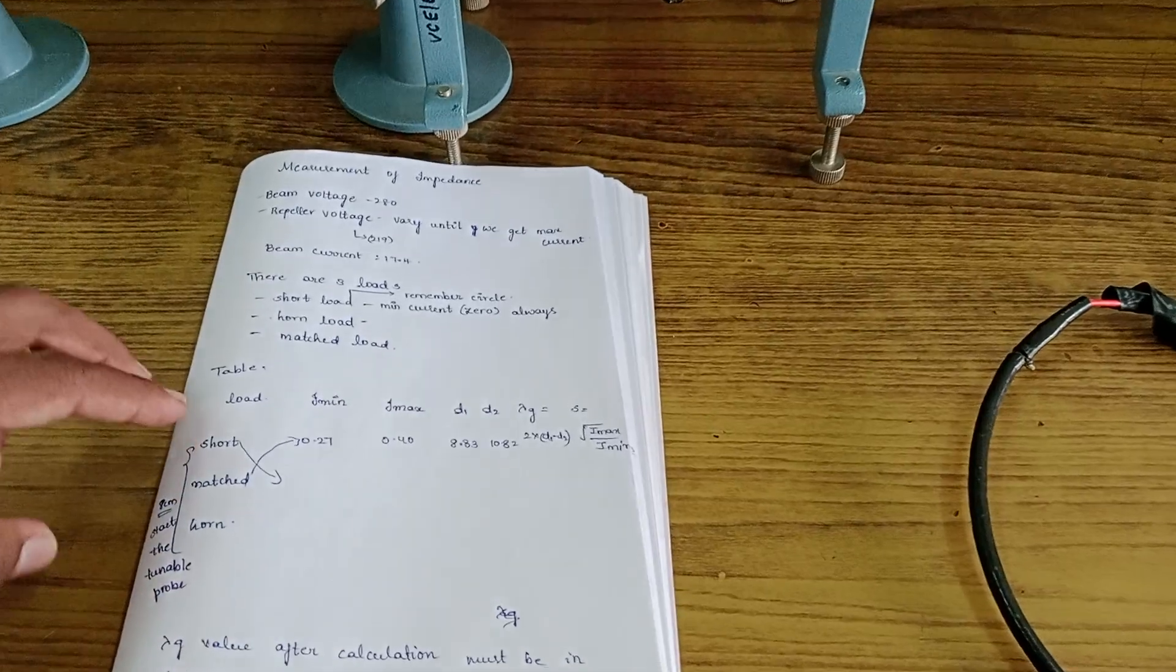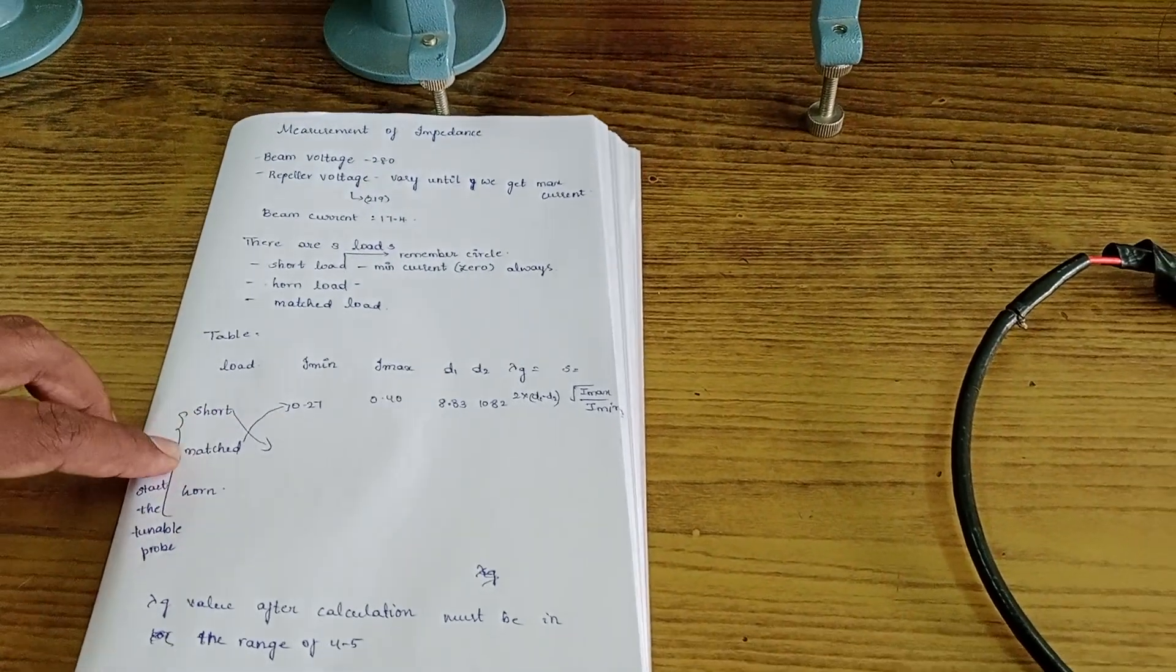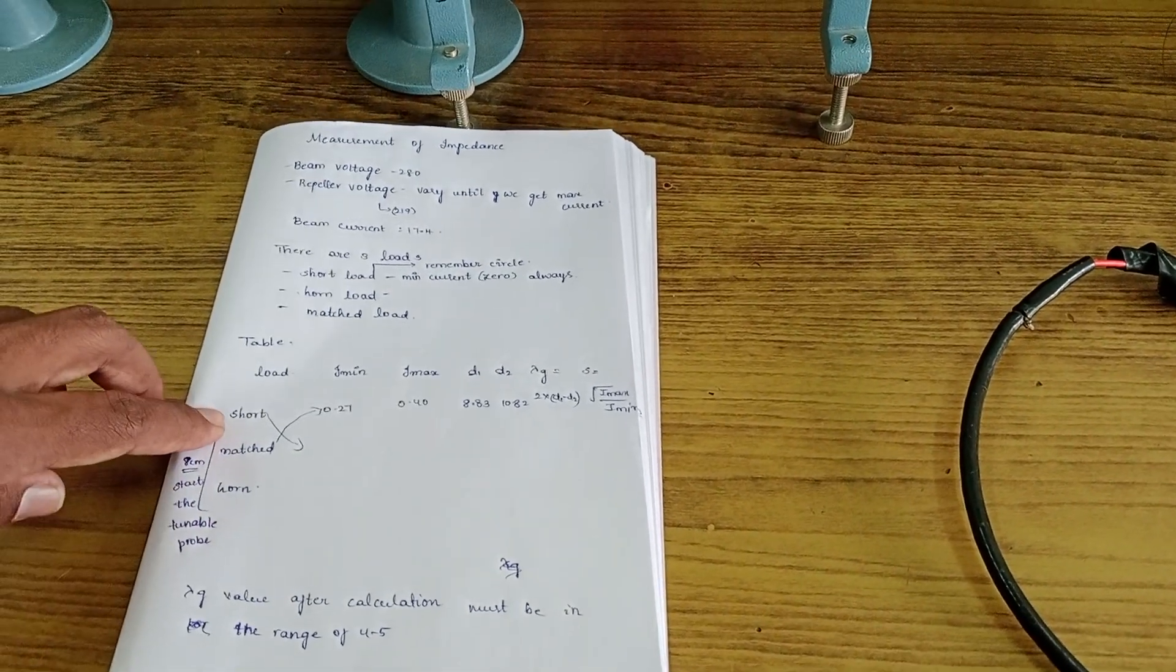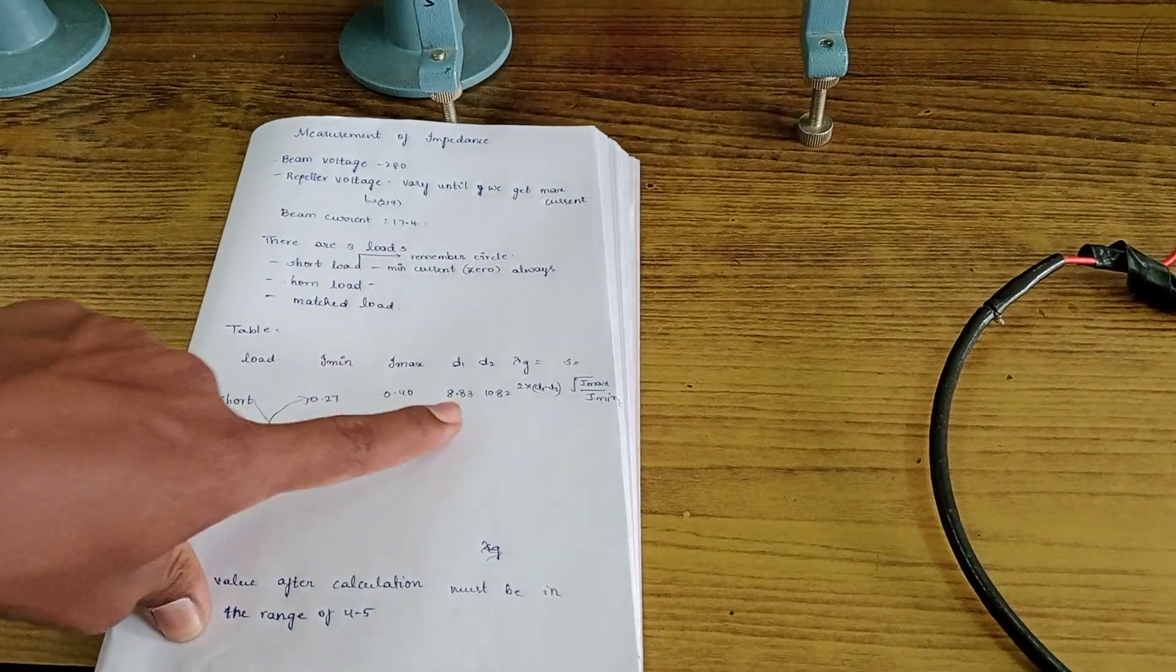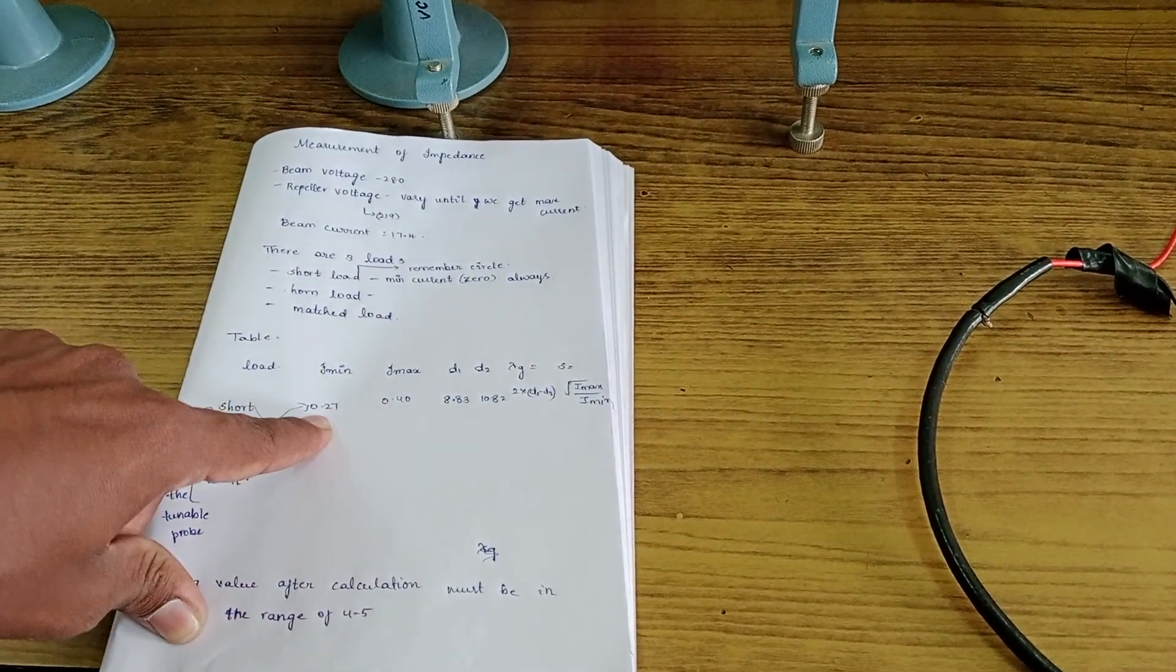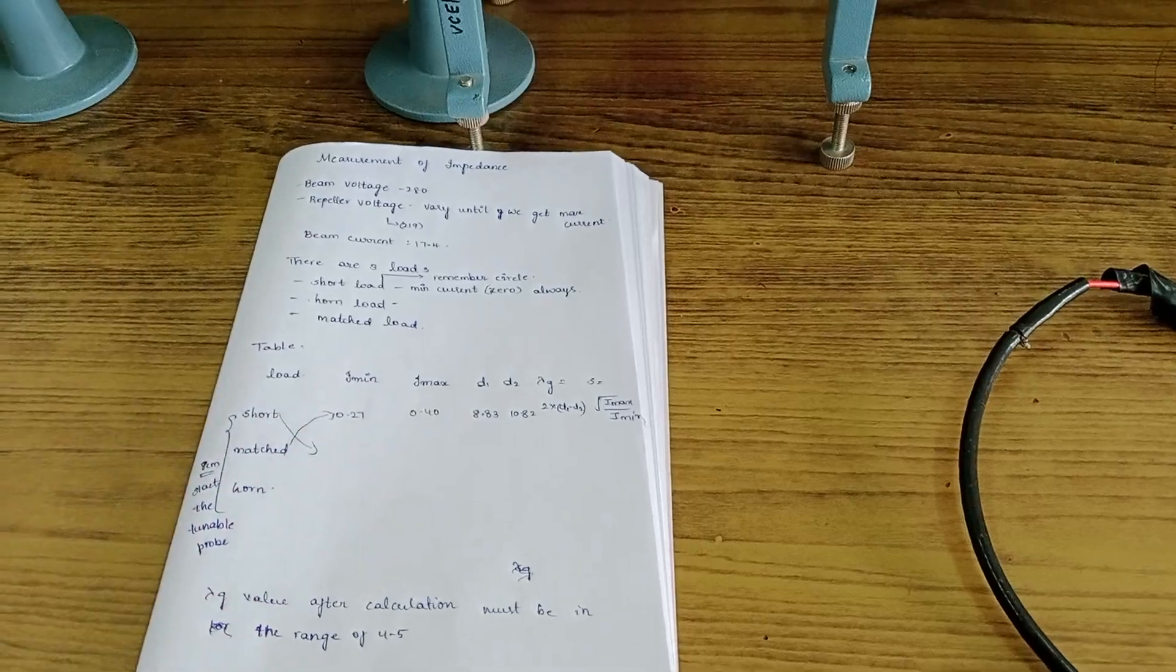And you have to repeat the same process for 3 types of load: Short, Matched and Open. You have to remember that for short type of load, the minimum current will be always 0. This is one of the points to be remembered.